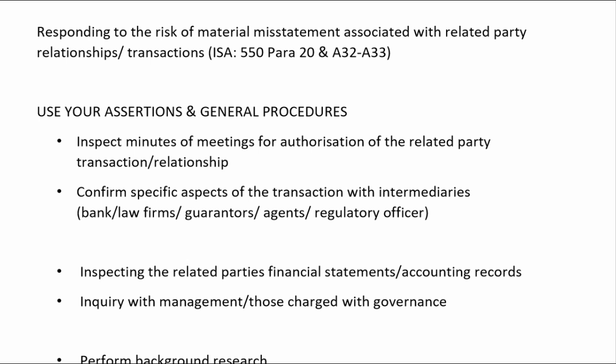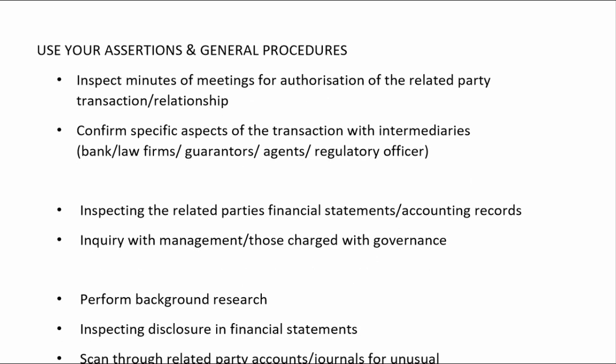We need to answer question 2 and part 2 of question 3, which requires auditing the related party transaction. This means we have to address the related party risk that it's not at arm's length, but we also need to address all the other risks of misstatement because it is a transaction. I need to use my assertions: accuracy, occurrence, completeness, cutoff, and classification — and our standard general procedures will help us see if the related party transactions are recorded at arm's length.